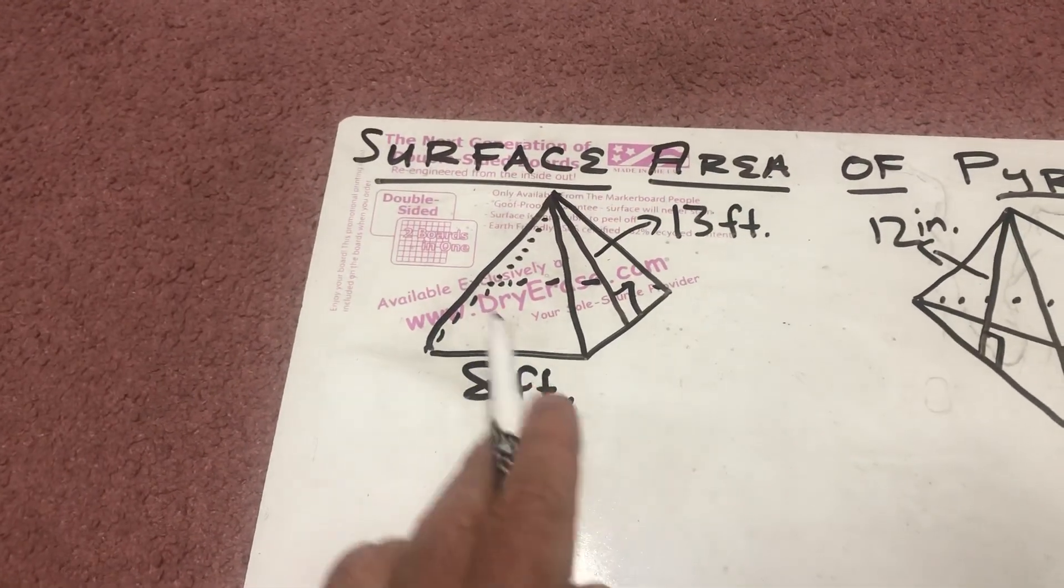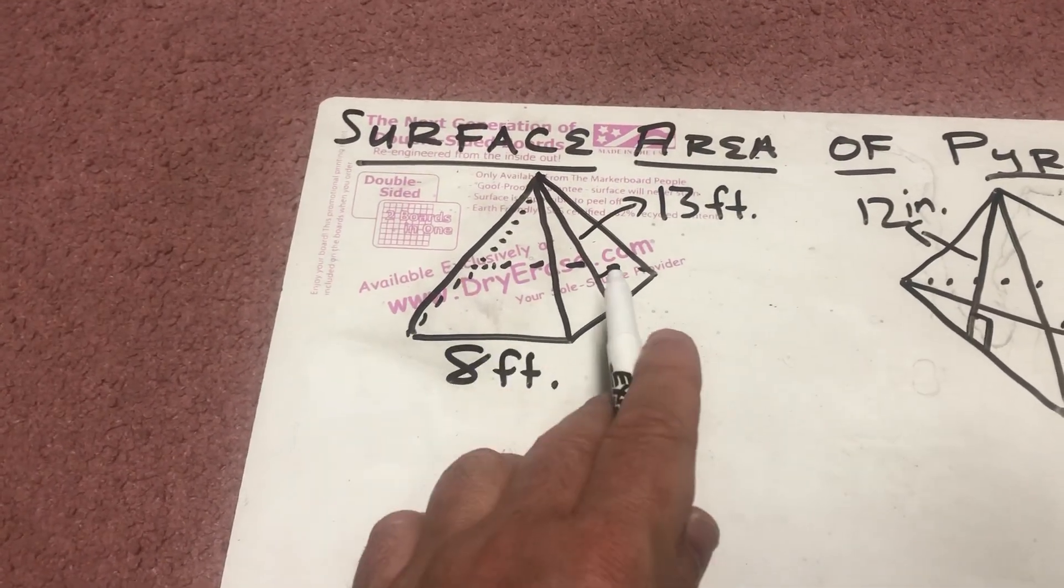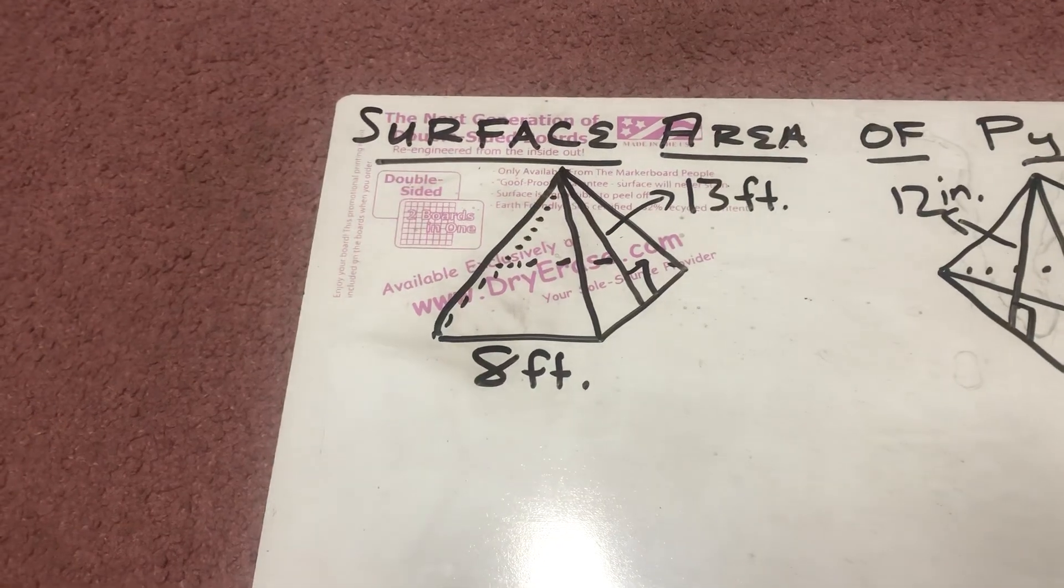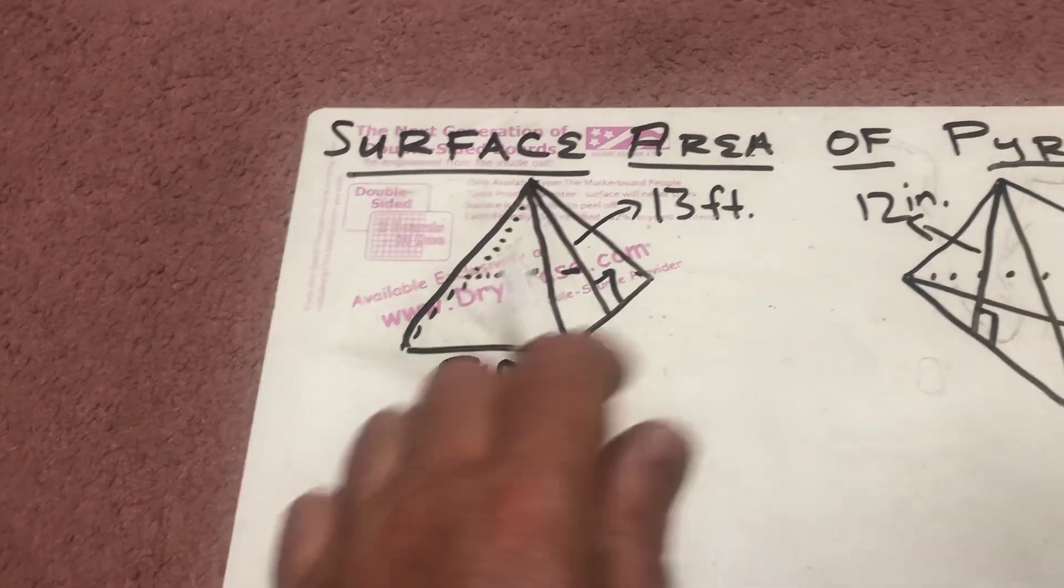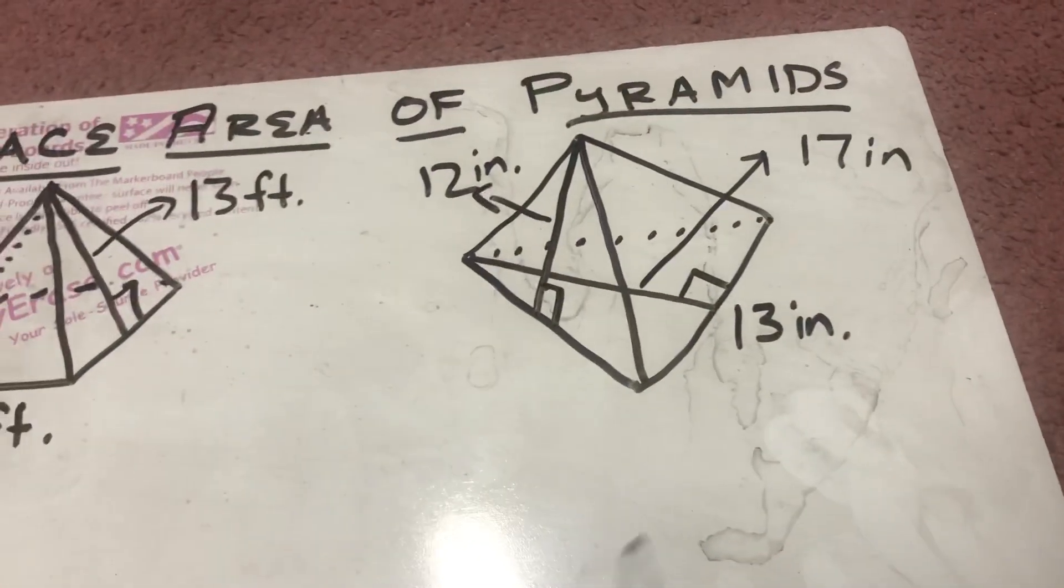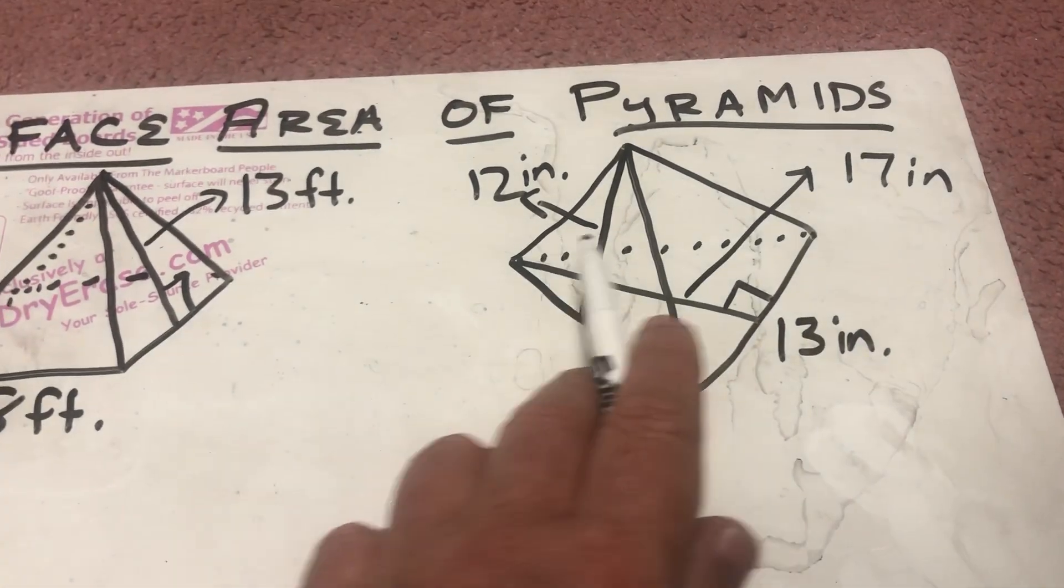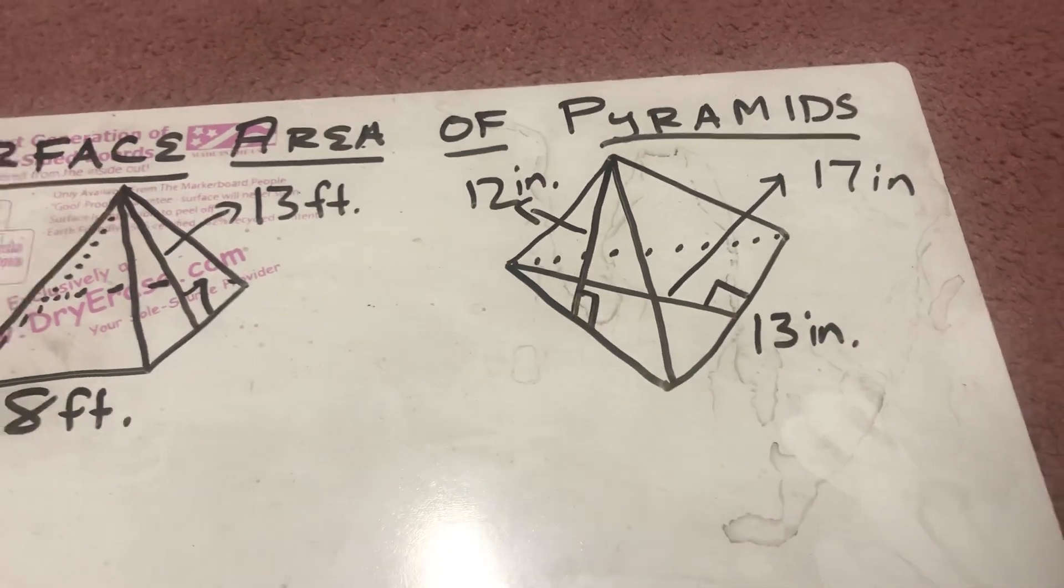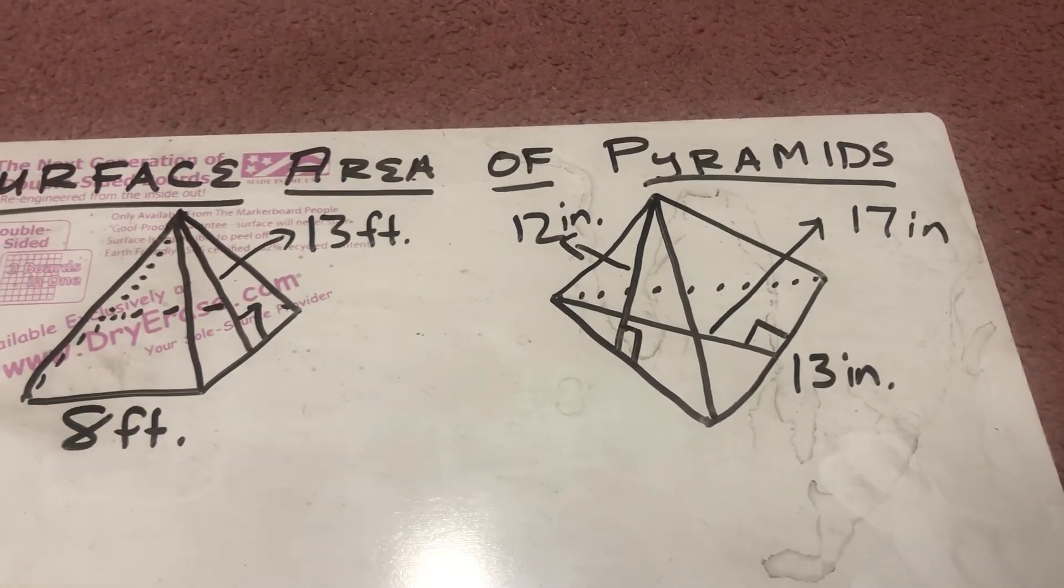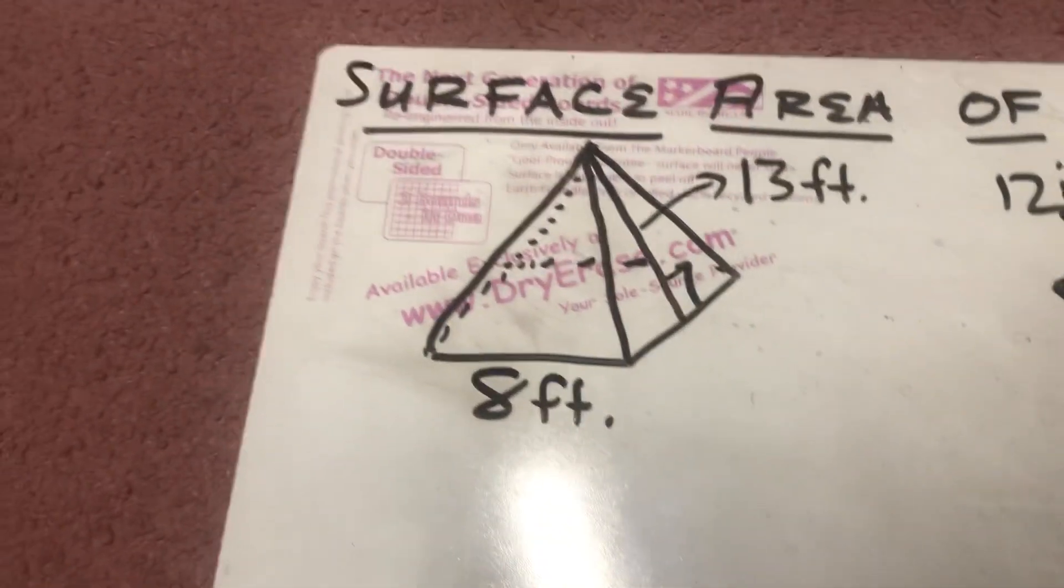So here we have, it's assumed that this is a square, because if this is 8, since the directions are going to tell us it's a regular polygon, all sides are 8. This triangle, one side is 13, which means this side is 13, which means this side over here is 13. It's a regular triangle, all sides the same length, equilateral.